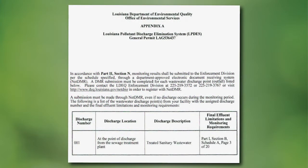The Appendix A should look something similar to this. For example, I'm going to use the LAG-53 general permit. The Appendix A will have a table with your discharge number, the discharge location, the discharge description, and your actual final effluent limitations and monitoring requirements. What's listed under that column is what you would need to look for in the actual permit that you downloaded or printed out.